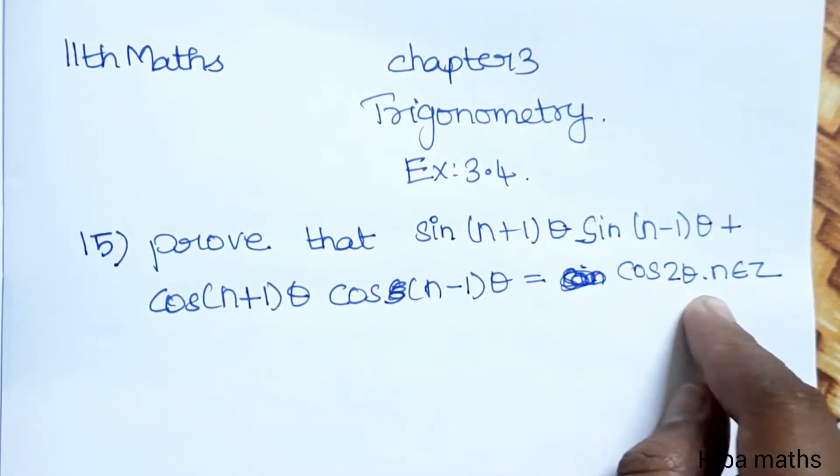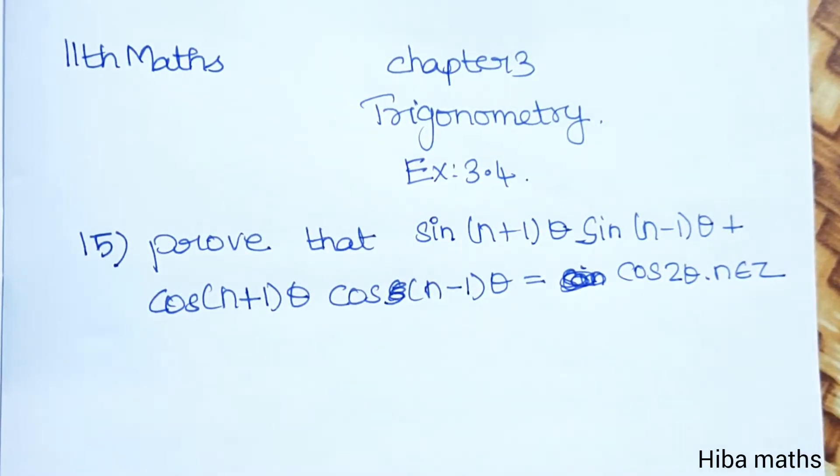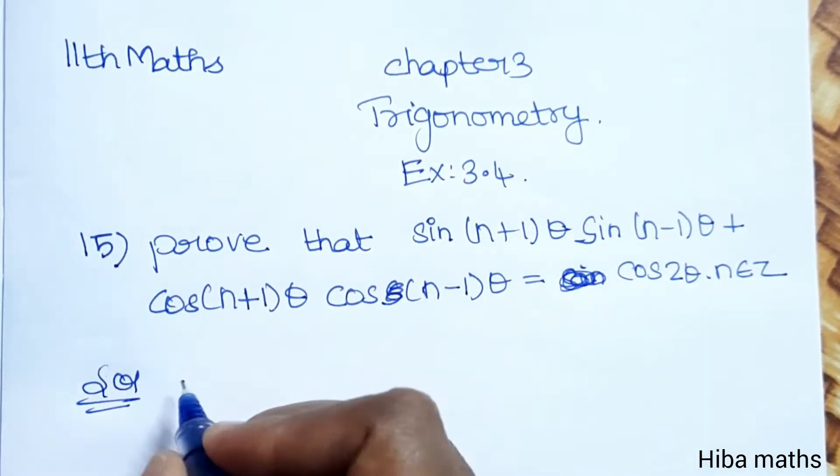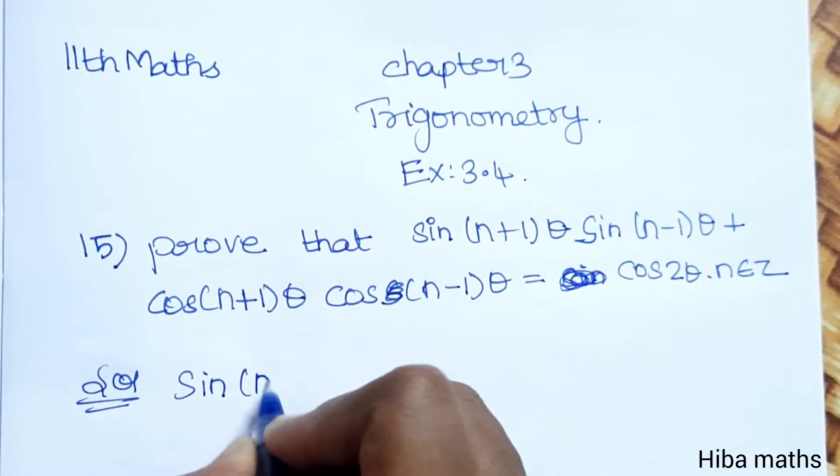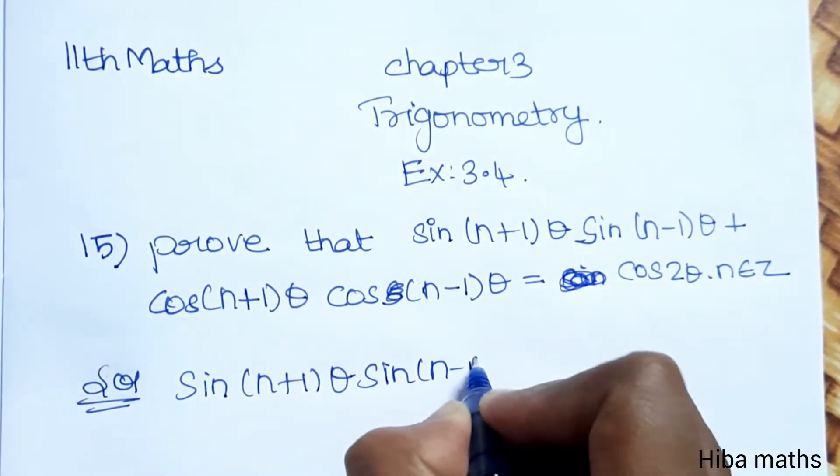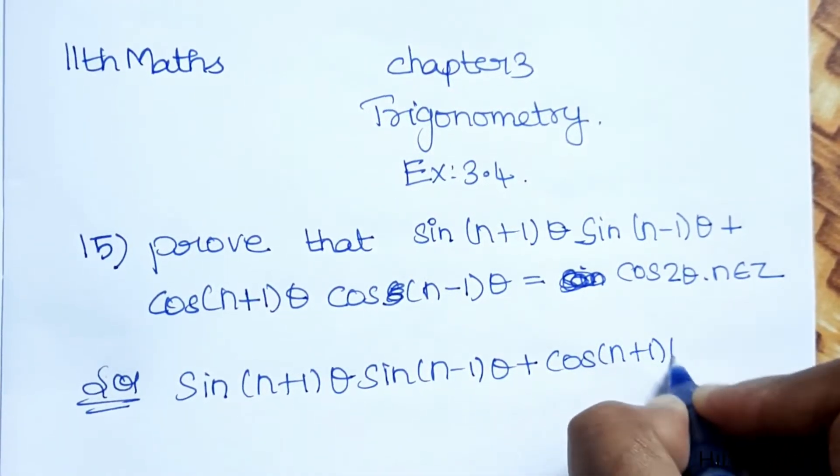cos 2θ where n is an element of the integers. So this question is very easy. In the solution, the given model is sin(n+1)θ sin(n-1)θ plus cos(n+1)θ